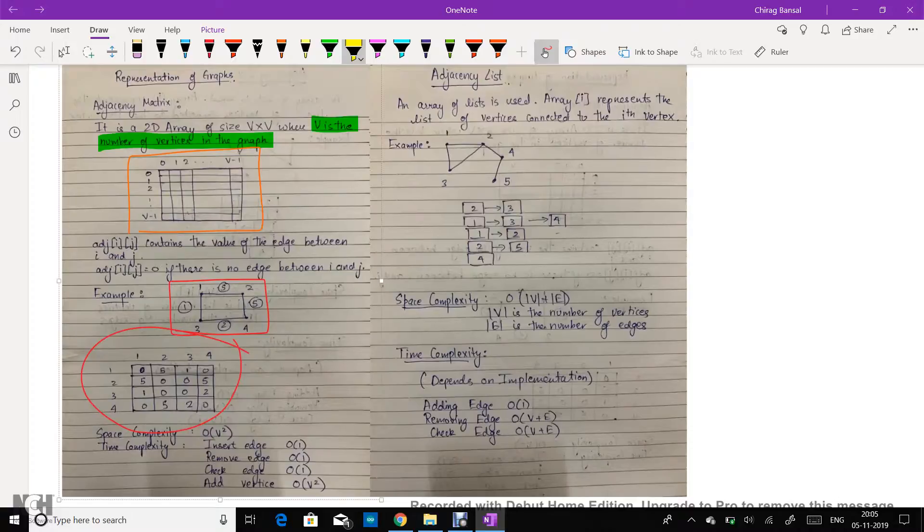The other common representation of graphs are adjacency list. Here an array of lists is used. The array i represents the list of vertices connected to the ith vertex. Let's look at an example.